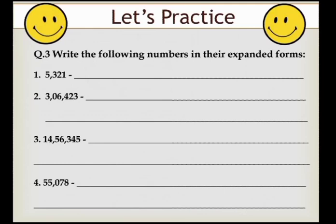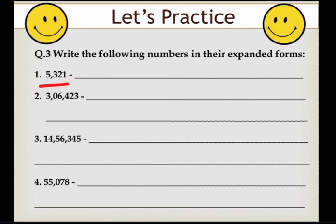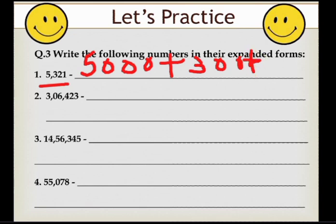Question number 3: write the following numbers in their expanded forms. Here you are given the standard form and you have to write the expanded form by finding the place value of each digit. First, we read the number 5,321. Place value of 5 is 5,000; place value of 3 is 300; place value of 2 is 20; place value of 1 is 1. So the expanded form is: 5,000 + 300 + 20 + 1.